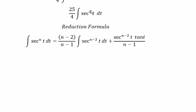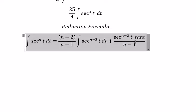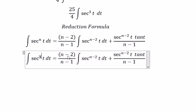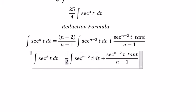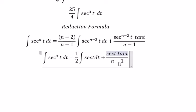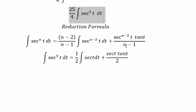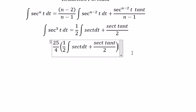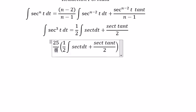Since n equals 3, we substitute: 3 minus 2 is 1, and n minus 1 is 2. So we have the integral of sec(t) times sec(t) squared. We bring 25 over 4 outside, and multiplying by 1 over 2 gives us 1 over 8 outside.